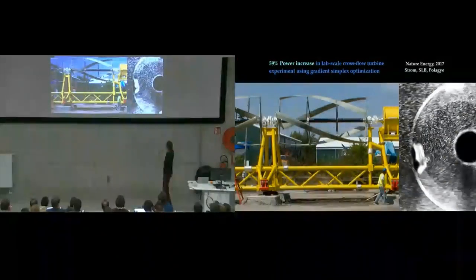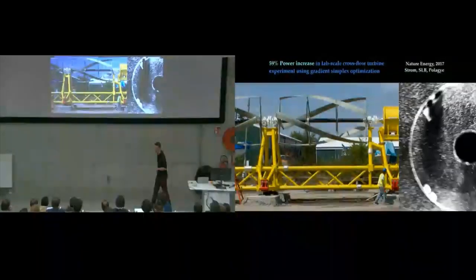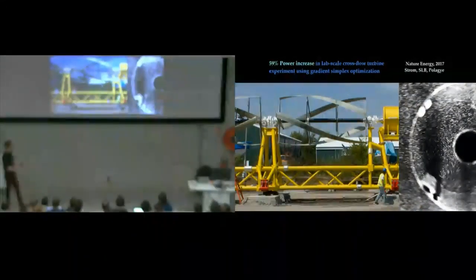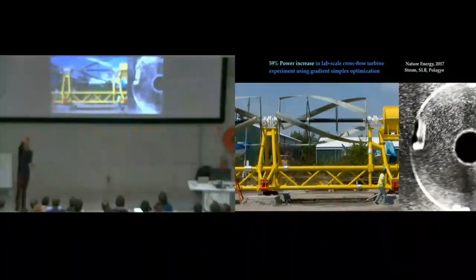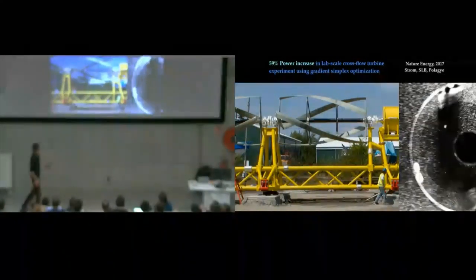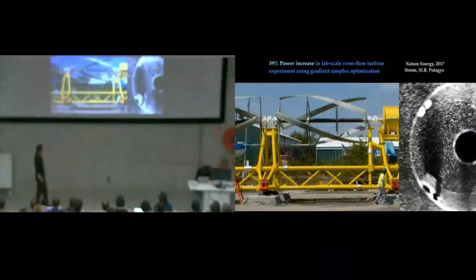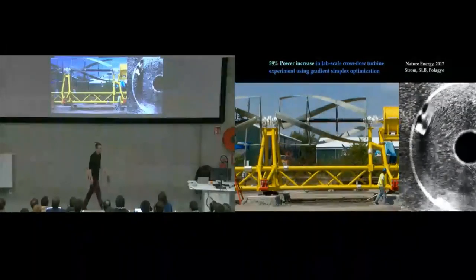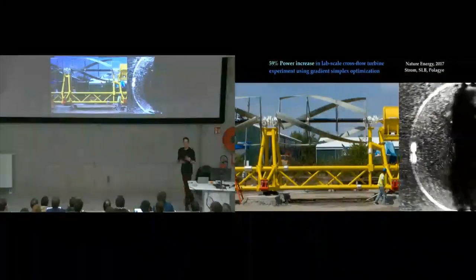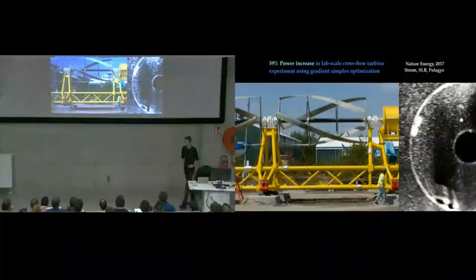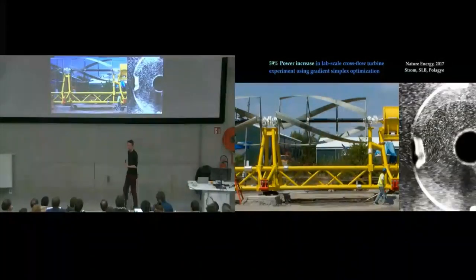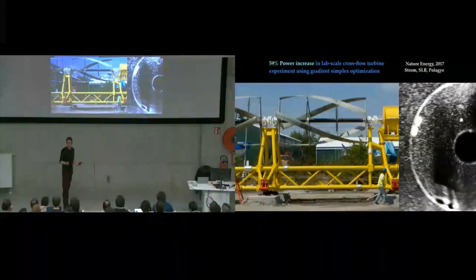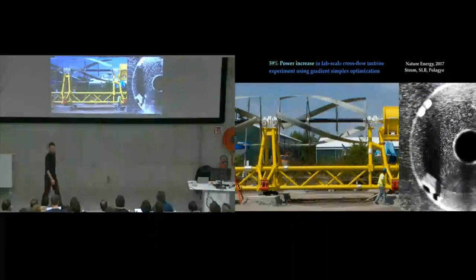Another optimization I really like, this is work with Ben Strom, who is a PhD student with Brian Pelagi and me. This is work in Brian's lab where he was trying to optimize the performance of a cross-flow turbine. A cross-flow turbine is just a vertical axis wind turbine that's knocked on its side and put in a river. This is a big example that's going to go in a river in Alaska. This is a little lab-scale device that's about yay big.